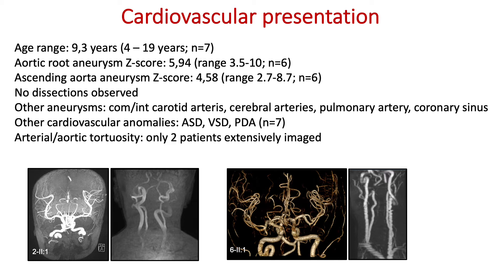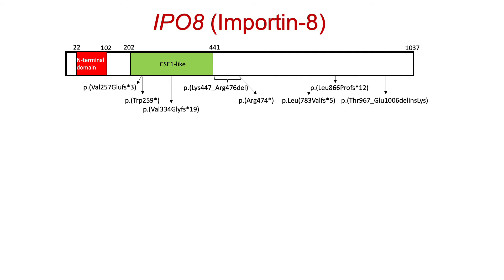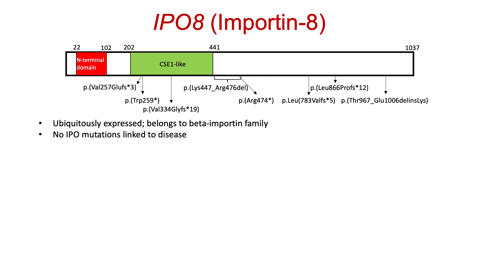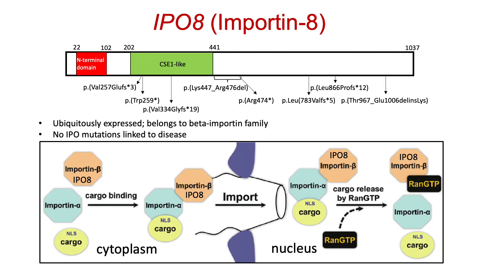So what is the gene underlying this condition? It is called IPO8 and it encodes for importin-8. As you can see on this diagram, mutations affect the whole gene and most often lead to what we call an early stop codon, which would lead to the fact that these patients do not make normal importin-8 at all. It belongs to a large family and so far no human conditions have been linked to this group of proteins. Its function involves importing cargo from the cytoplasm across the nuclear membrane to the nucleus.